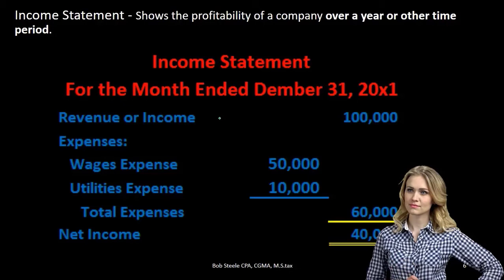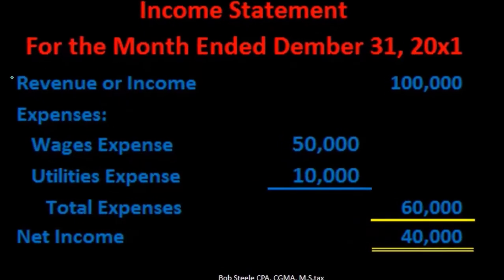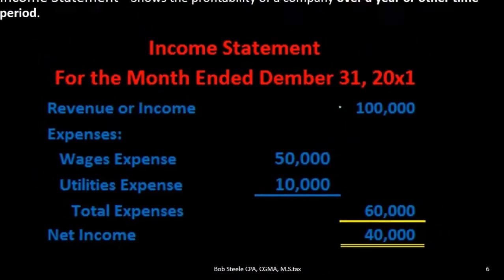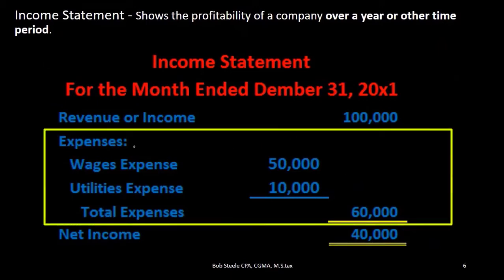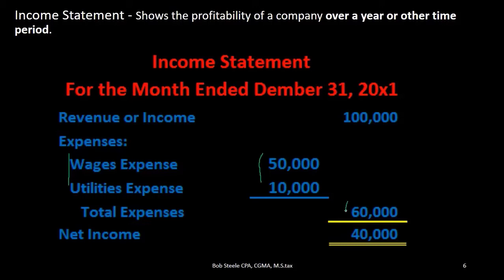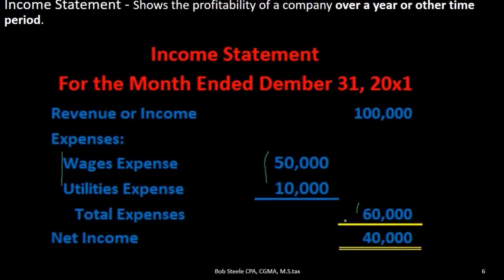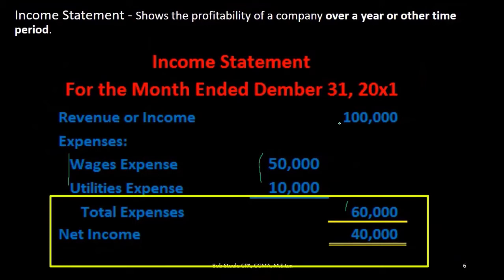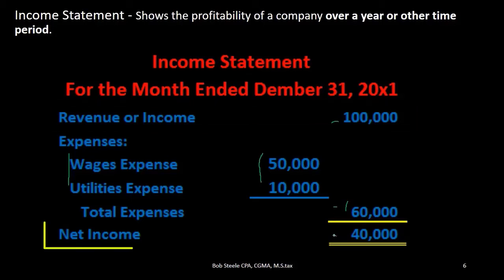The hope is that total expenses will be less in dollar amount than revenue. When there is only one revenue account, no subcategory is needed — the number is placed on the right-hand side directly. Expenses are subcategorized with a colon, indented, and totaled in the outer column — $50,000 plus $10,000 gives $60,000 of expenses. Net income, the bottom line, is revenue minus expenses: $100,000 minus $60,000 equals $40,000.